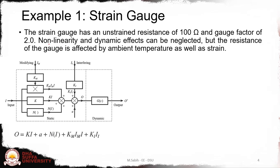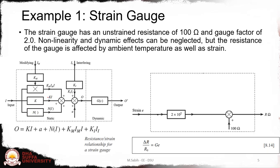This is the basic model and we have this equation. Since we say the nonlinearity and the dynamic effects can be ignored or neglected, we will remove this GS part, so there will be no dynamic consideration here. Also, the nonlinearity will be removed, so we will be left with the rest of the things.